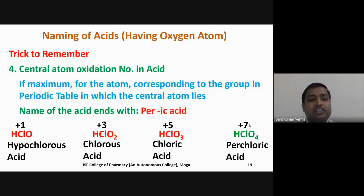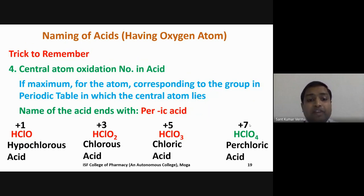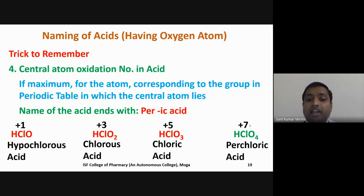Fourth trick: if the central atom oxidation state is maximum — for example HClO₄ has oxidation state +7 — the name ends with 'per-…-ic acid'. So HClO₄ is named perchloric acid.